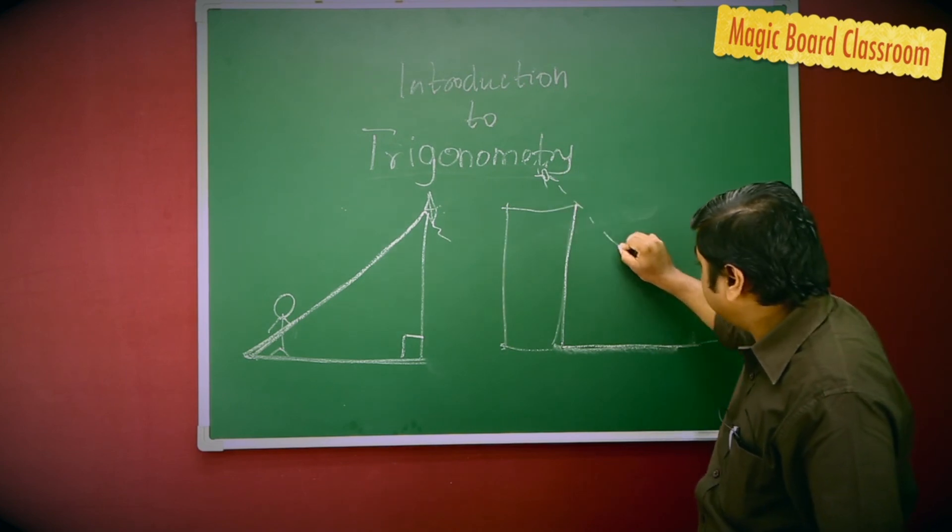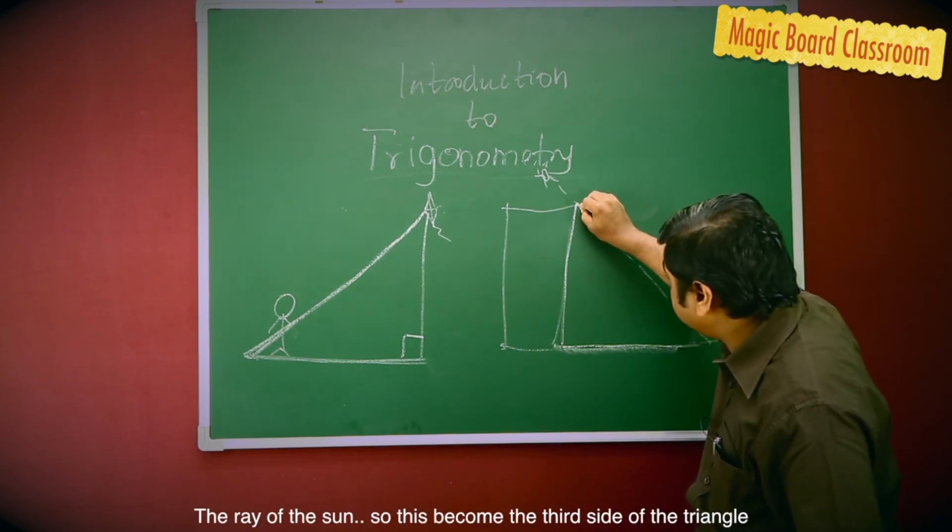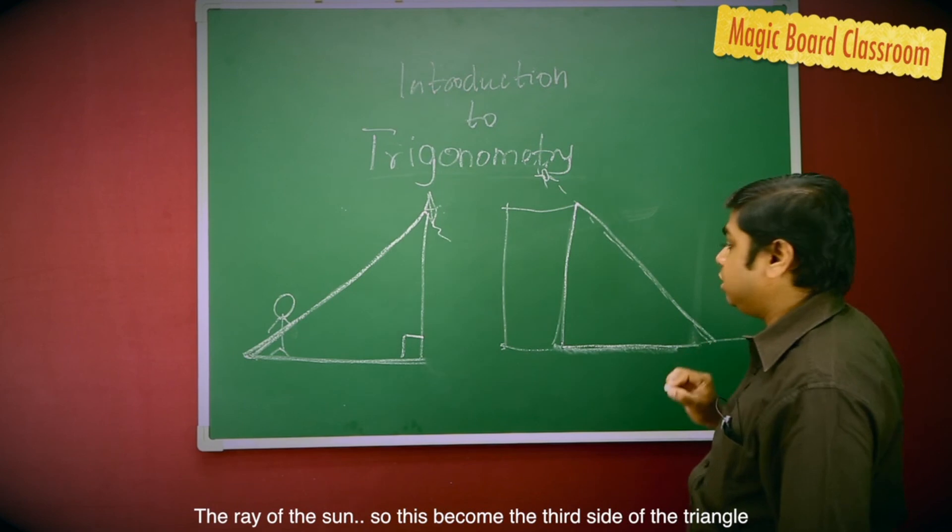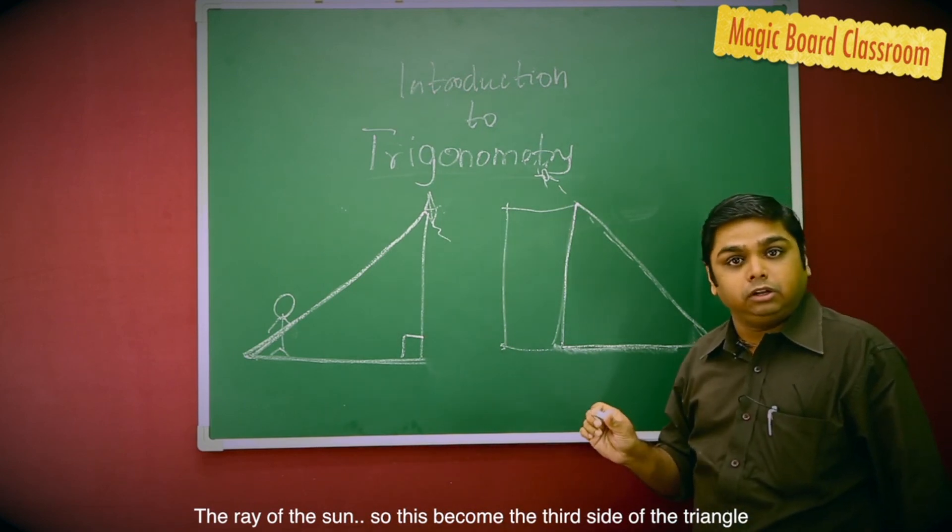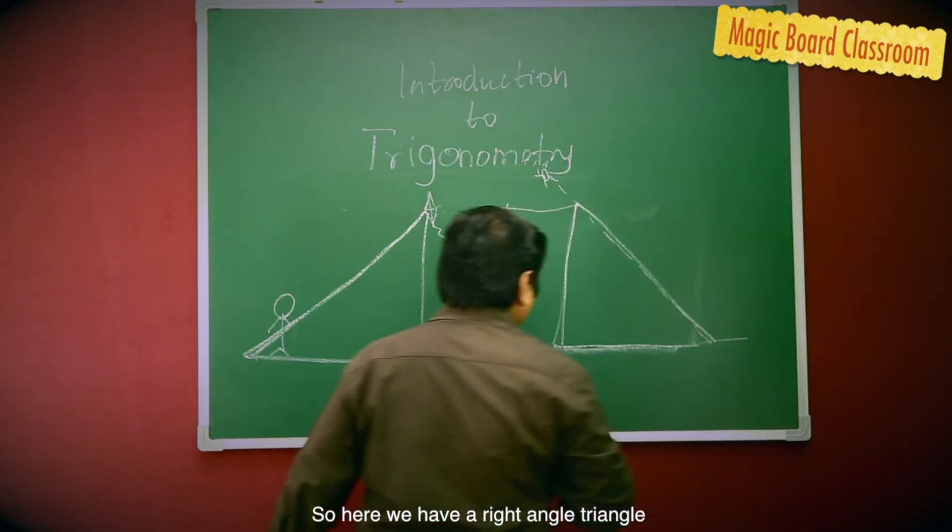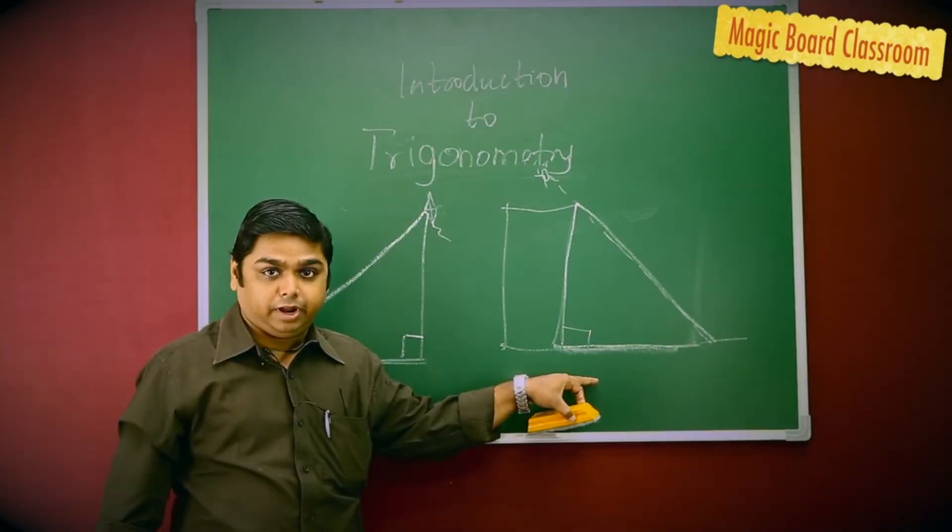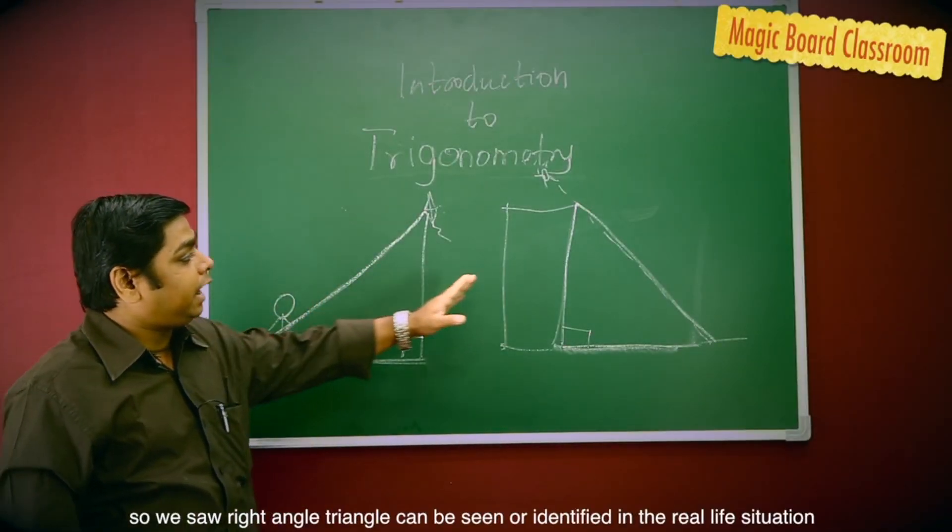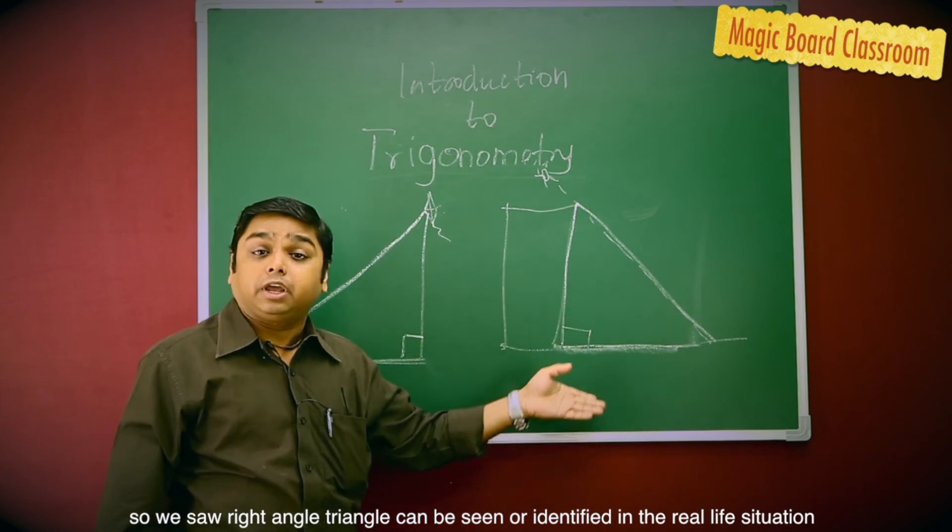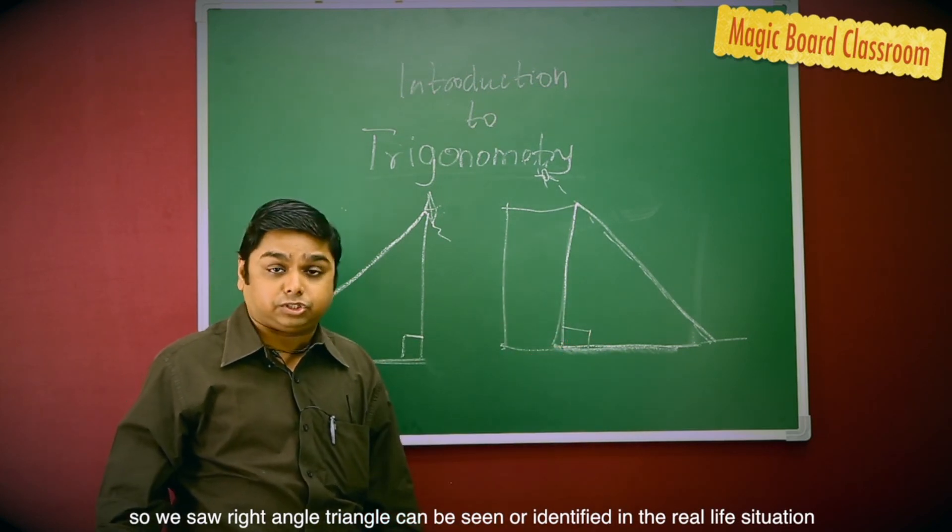Where will the third side be? Obviously, the ray of the sun. So, this becomes the third side of the triangle. So, here we have a right-angled triangle. We saw right-angled triangles can be seen or identified in real-life situations. This is the basic of trigonometry.